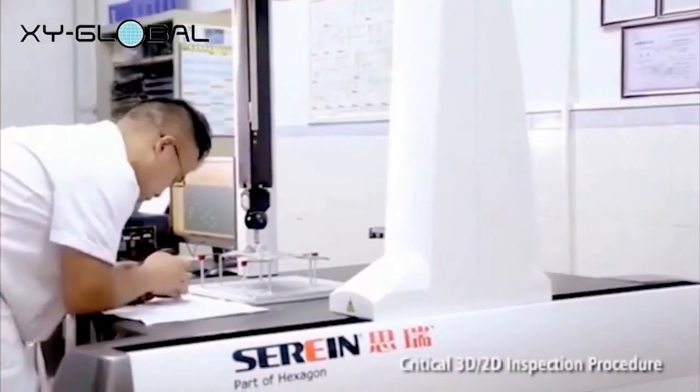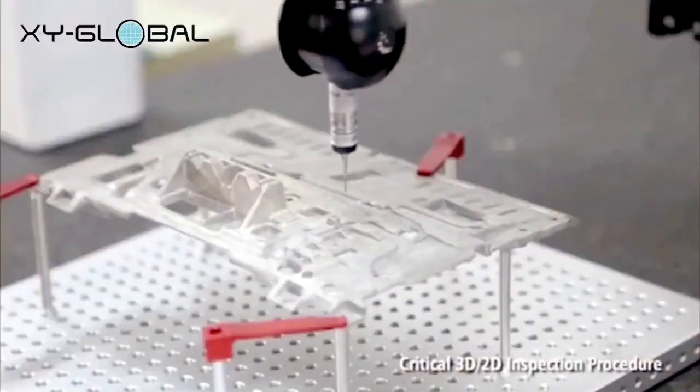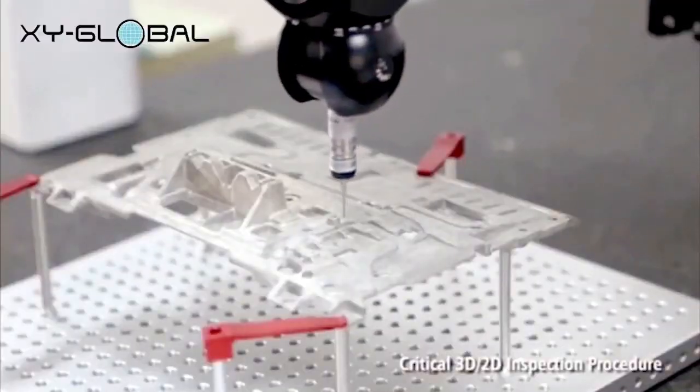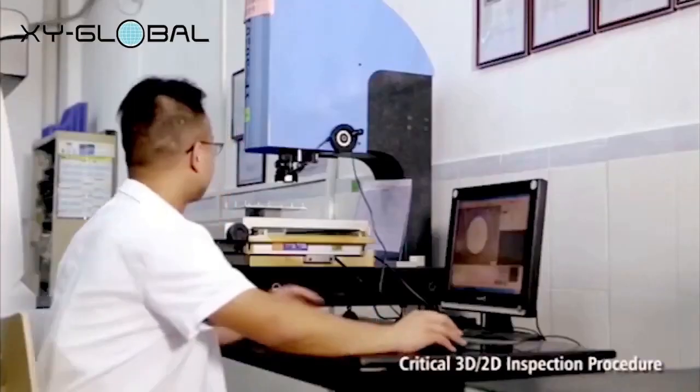Finally came the 3D 2D inspection procedure. A quality inspection involves measuring, examining, testing, or gauging various characteristics of a product and comparing those results with specified requirements to determine whether there is conformity.